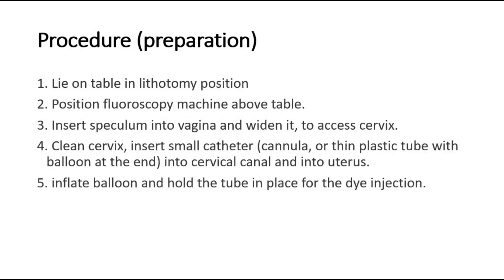The first part of the HSG procedure is patient preparation. The doctor will ask the patient to lie on the table with knees bent and legs open as if having a pelvic exam, and the fluoroscopy machine will be positioned above the table. The doctor will insert a speculum into the vagina to widen it and assess the cervix, then clean the cervix and insert a small catheter through the cervical canal into the uterus. The catheter may be a thin plastic cannula, or a tube with a balloon at the end that inflates inside the body to hold it in place for the injection of the dye.